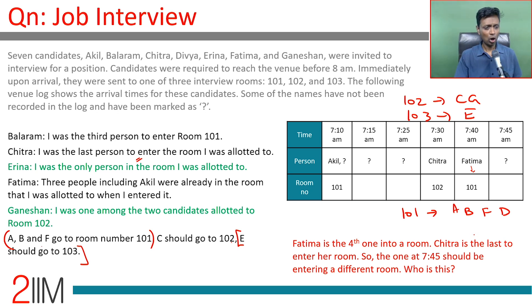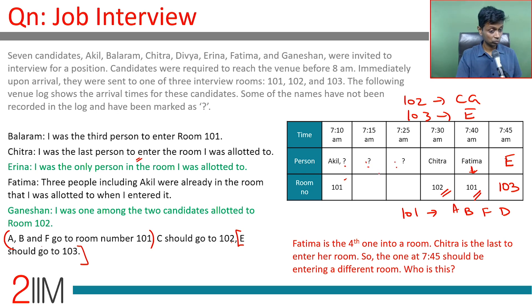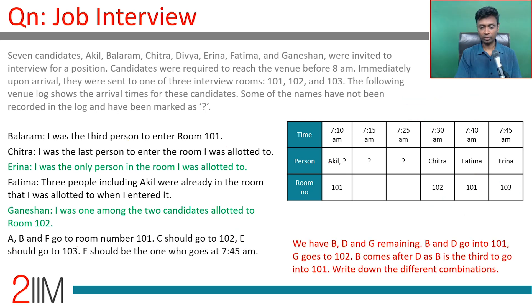Fatima is the last person to enter 101, because when she enters three people are already there. Chitra is the last person to enter 102. So the order within 101 is established with Fatima last. Now we need to place the timings for B, G, and D. Balram says he was the third person to enter room 101, so in 101 we have A, D, B, F — with F as the fourth.